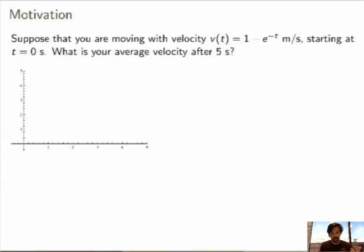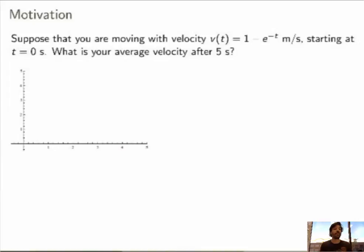Suppose that you're moving with a certain velocity function, say v of t is equal to 1 minus e to the minus t, and you start at t equals 0. What is your average velocity after 5 seconds? That's a good question, so let's try to calculate that.